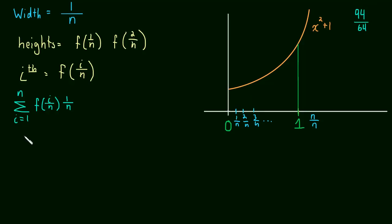And f of i over n, well, we have a function, so let's plug i over n into our function. And this becomes the sum of i over n, i over n, all squared, that goes in for x, x squared plus 1, times 1 over n.